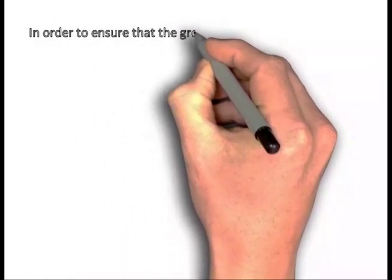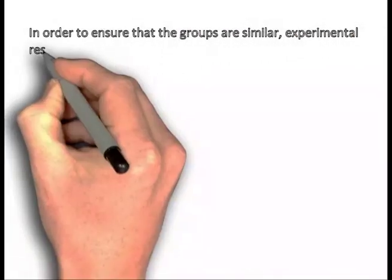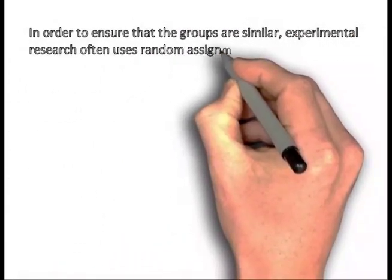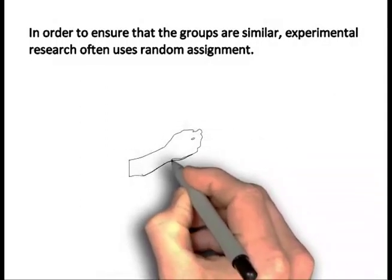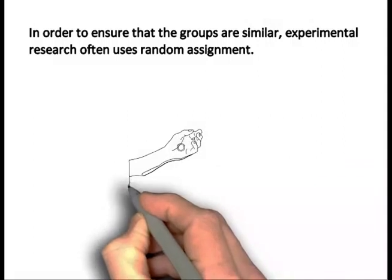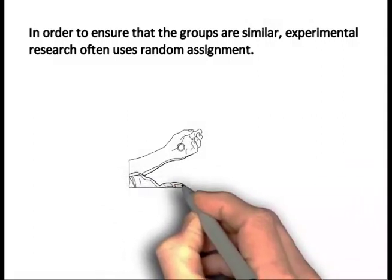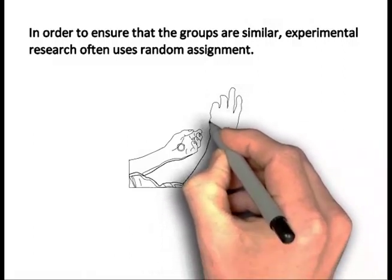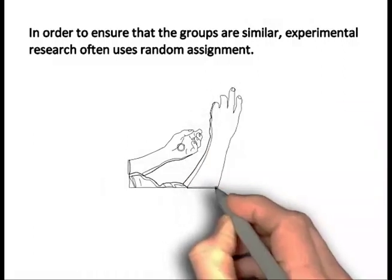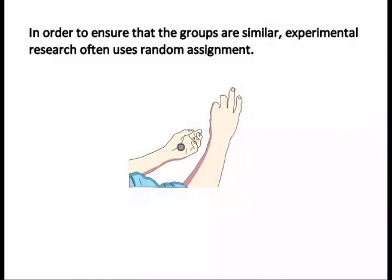In order to ensure that the groups are similar, experimental research often uses random assignment. This process is analogous to coin flipping, where research subjects such as individuals or classes have an equal chance of being assigned to receive the intervention. By assigning groups at random, the groups are likely to have similar characteristics.